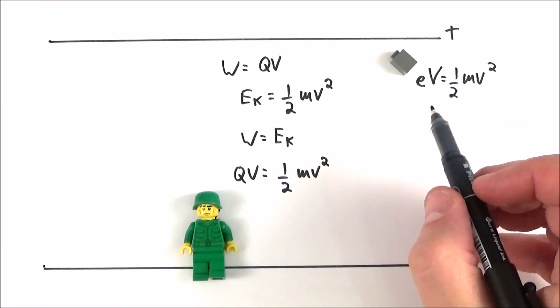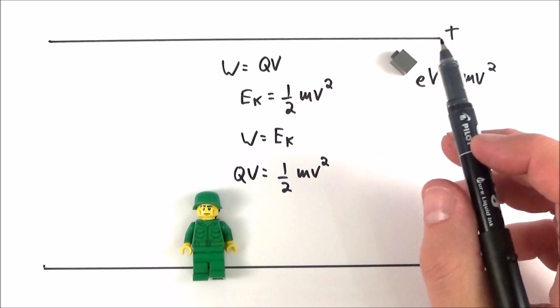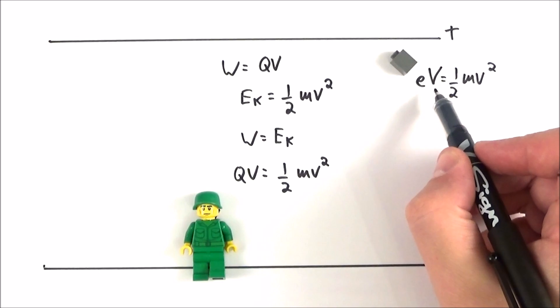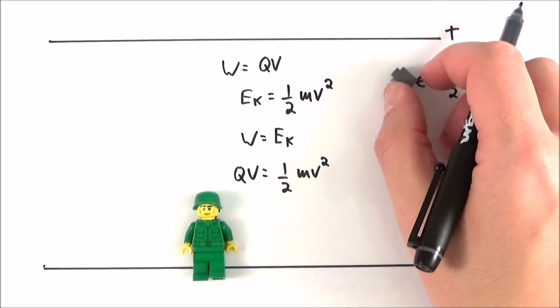You might notice some similarities between this and our definition for the electron volt, which is in one of the other videos I've made previously. So that's the energy that it gains, the charge multiplied by the potential difference, and if we then release it, this will turn back into kinetic energy.